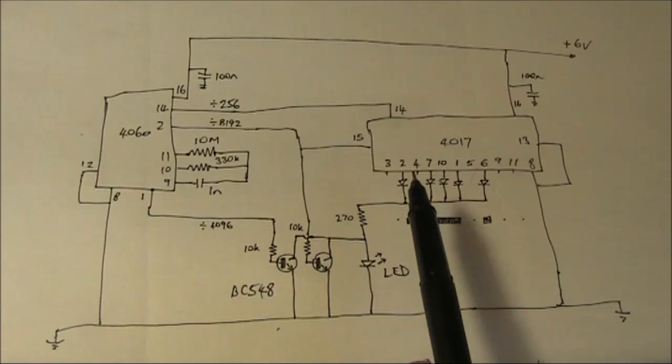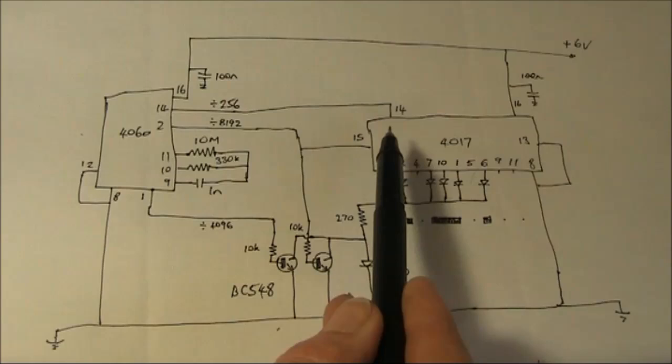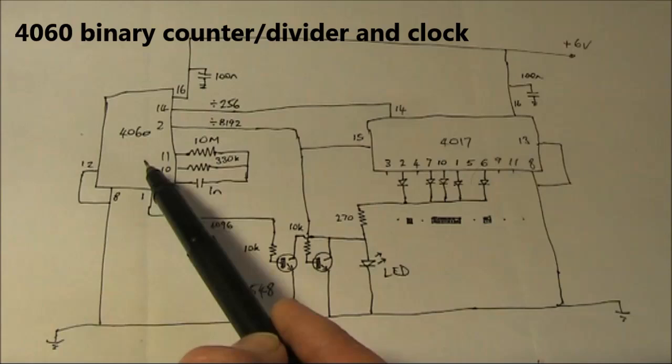The 4017 looks after the formation of your desired Morse character. But we need a clock to drive it, and also some other timing circuitry, to ensure there's a long interval between the letter that we're sending. For that, I suggest a 4060.